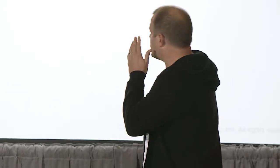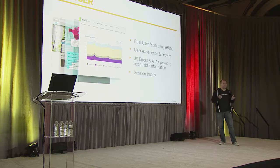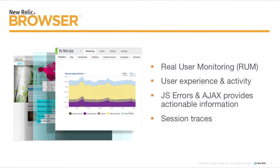We start with browser. Browser is the reality of your application and your user experience from your application perspective. It tells you what is happening, where it is happening, what that experience looks like. If you're only looking at the back-end processing, you miss that 80 to 90 percent of page load that occurs in the front end.